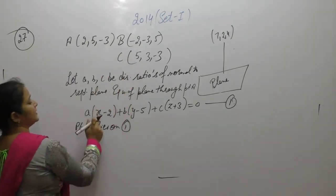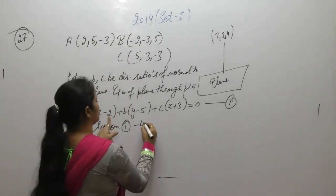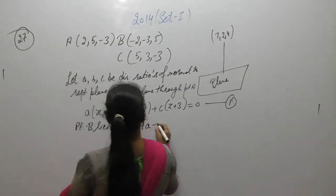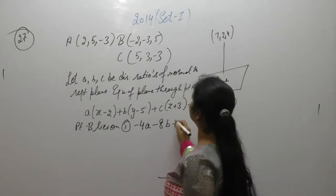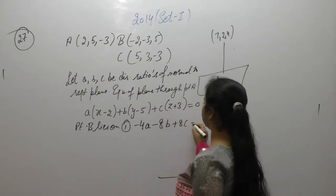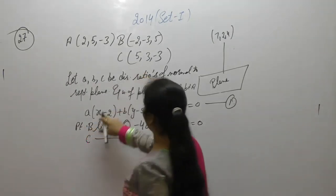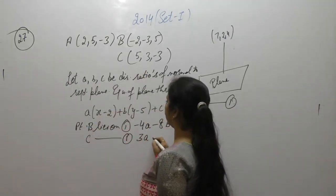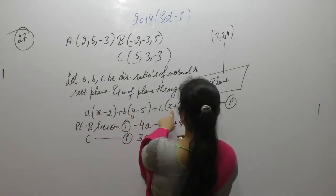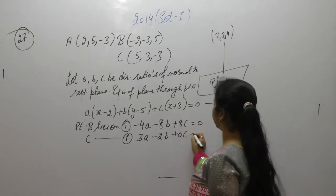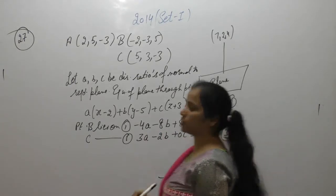Point B(−2, −3, 5) lies on equation 1: substituting gives −4a − 8b + 8c = 0, call this equation 2. Point C(5, 3, −3) lies on equation 1: substituting gives 3a − 2b + 0c = 0, call this equation 3.